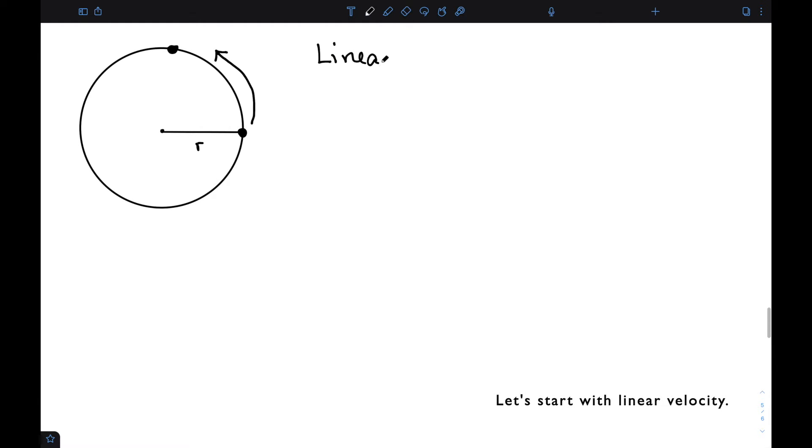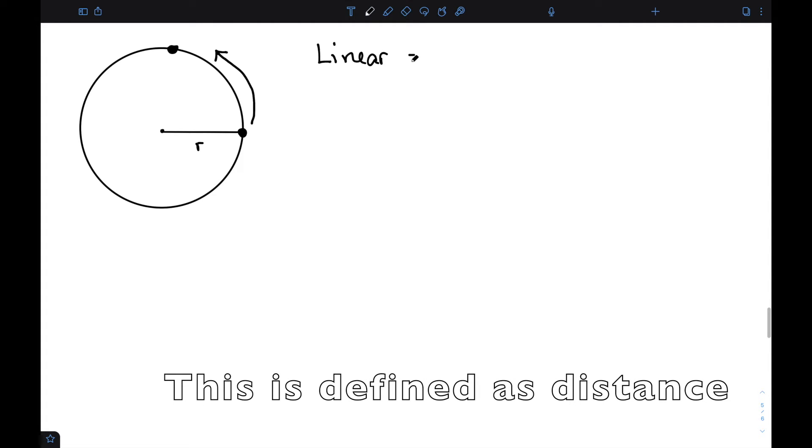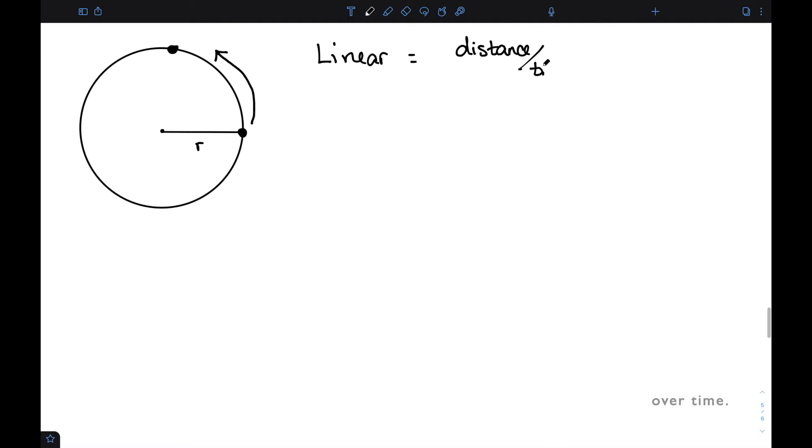Let's start with linear velocity. This is defined as distance over time. If I need to think about how far this particular point has gone, it's gone the length of this arc. So distance is going to be the length of the arc.